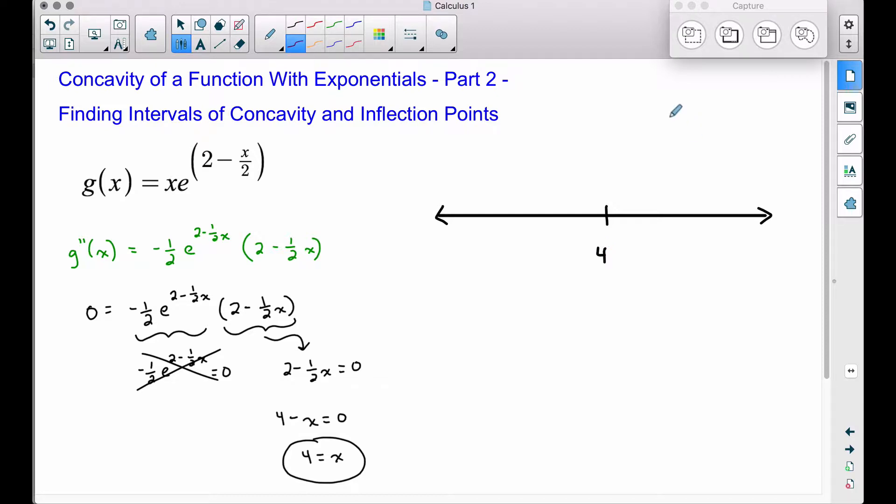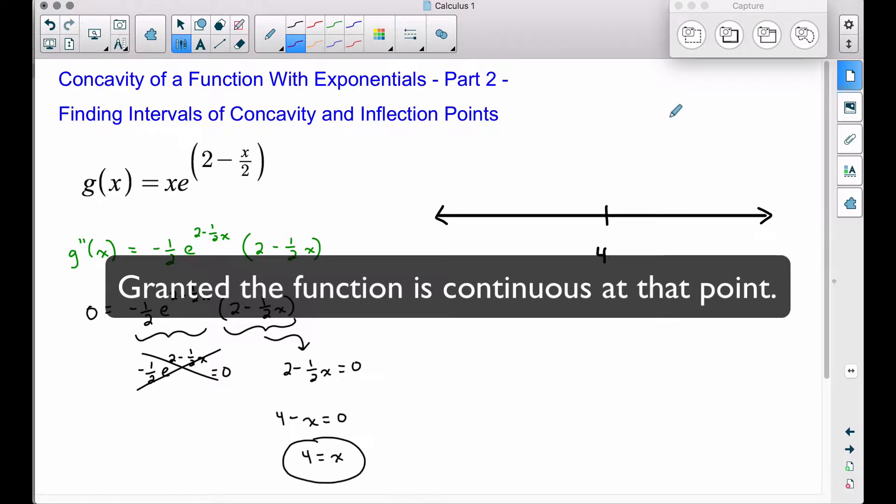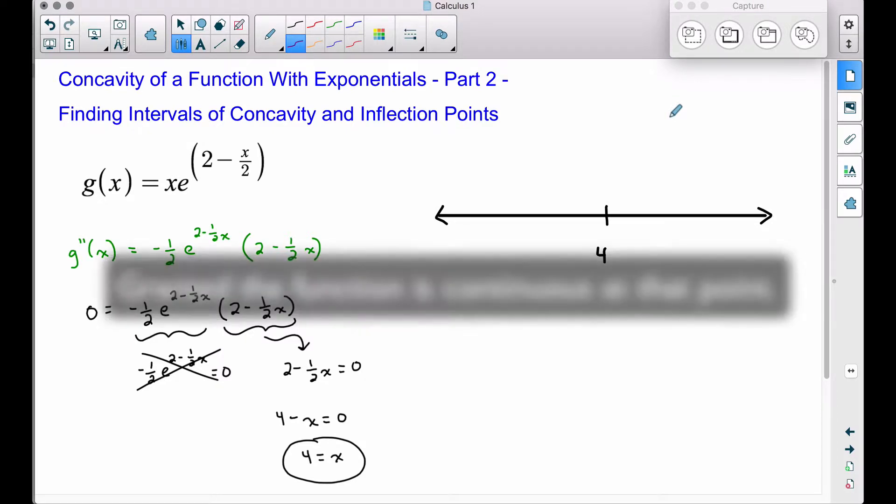In earlier videos, we mentioned when the second derivative is positive, our function is concave up. And when the second derivative is negative, our function is concave down. If we have a spot where the concavity changes, maybe from concave up to concave down or concave down to concave up, we have an inflection point there. Let's see if we have that in this example.